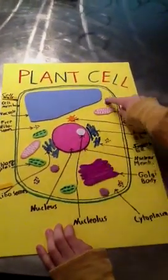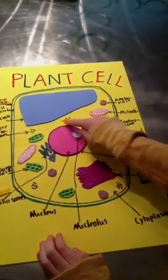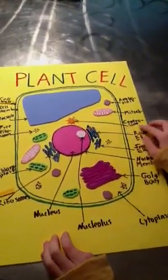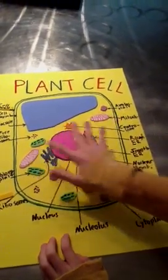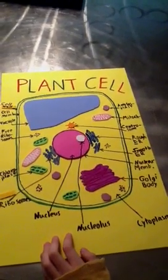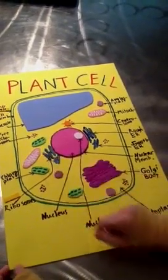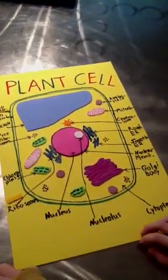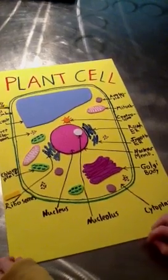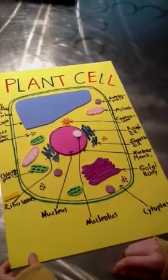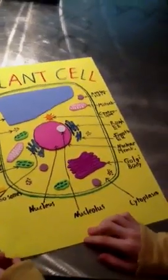These purple dots. This is the centrosome. These two are the mitochondrions. And these little dots that are sitting on the rough endoplasmatic reticulum are the bound ribosomes.